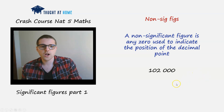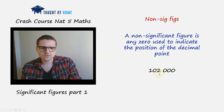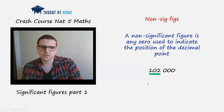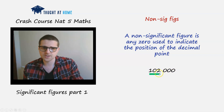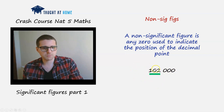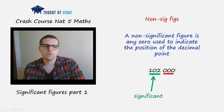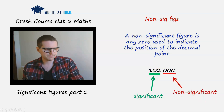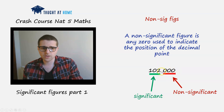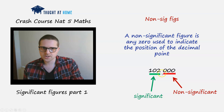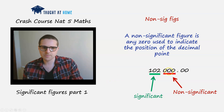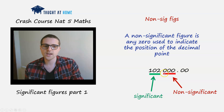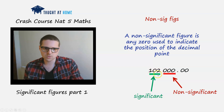Take the number 102,000 — one, zero, two, then three zeros. We say there are three significant figures here, because this could have been 101,995 rounded to three significant figures. The zero between the one and the two is significant because it sits between two non-zero numbers. The three trailing zeros are non-significant because they simply tell us the position of the decimal point — without them we'd just write 102.